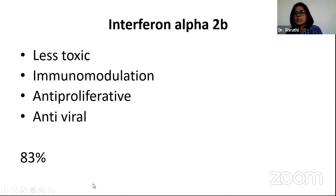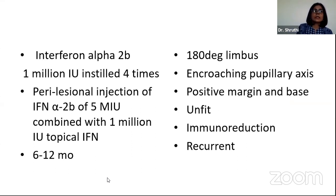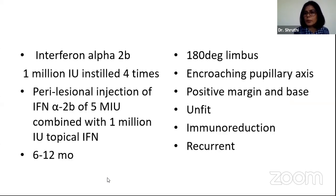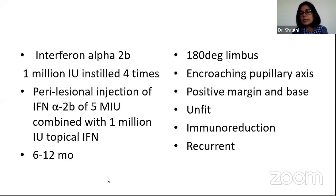Alpha interferon comes in 5 million international unit pre-filled syringes. For topical application, we dilute it to 1 million international units, instilled four times a day. For perilesional injection, we use 5 million international units directly from the syringe. It can be given topically for up to 6 to 12 months, or perilesional injections up to 4 months. Once the lesion completely disappears clinically, continue for another 3 months then stop.